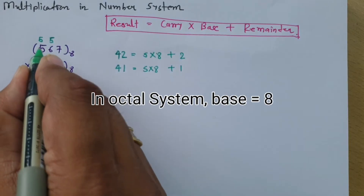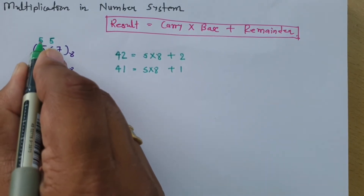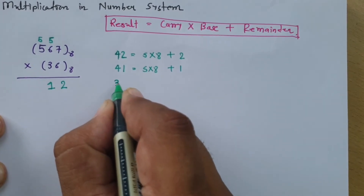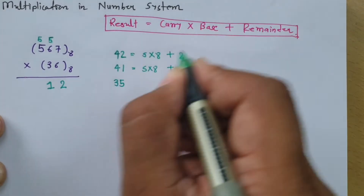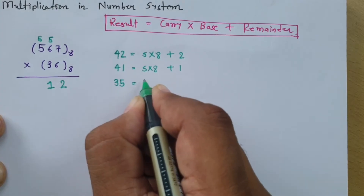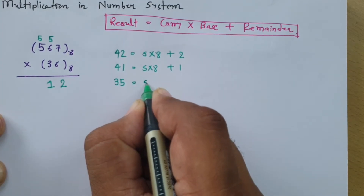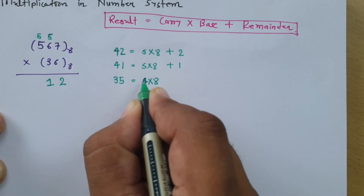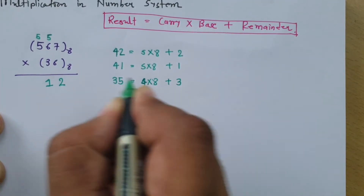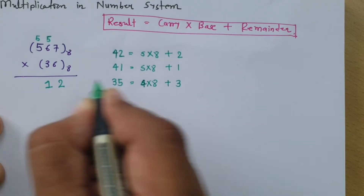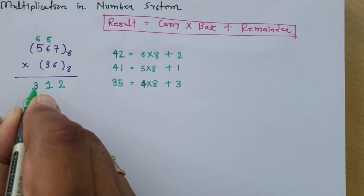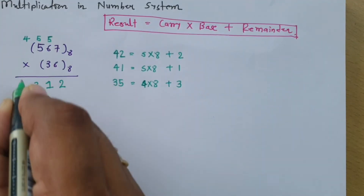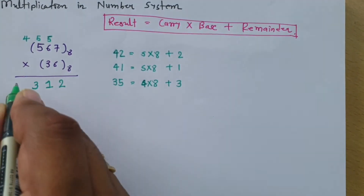Now 6 into 5 is 30, plus the carry of 5, giving 35. Elaborating 35 using our formula: 4 × 8 = 32 plus 3 equals 35. So the remainder is 3 and carry is 4. Since there is no further multiplication, carry 4 is written directly in the result.